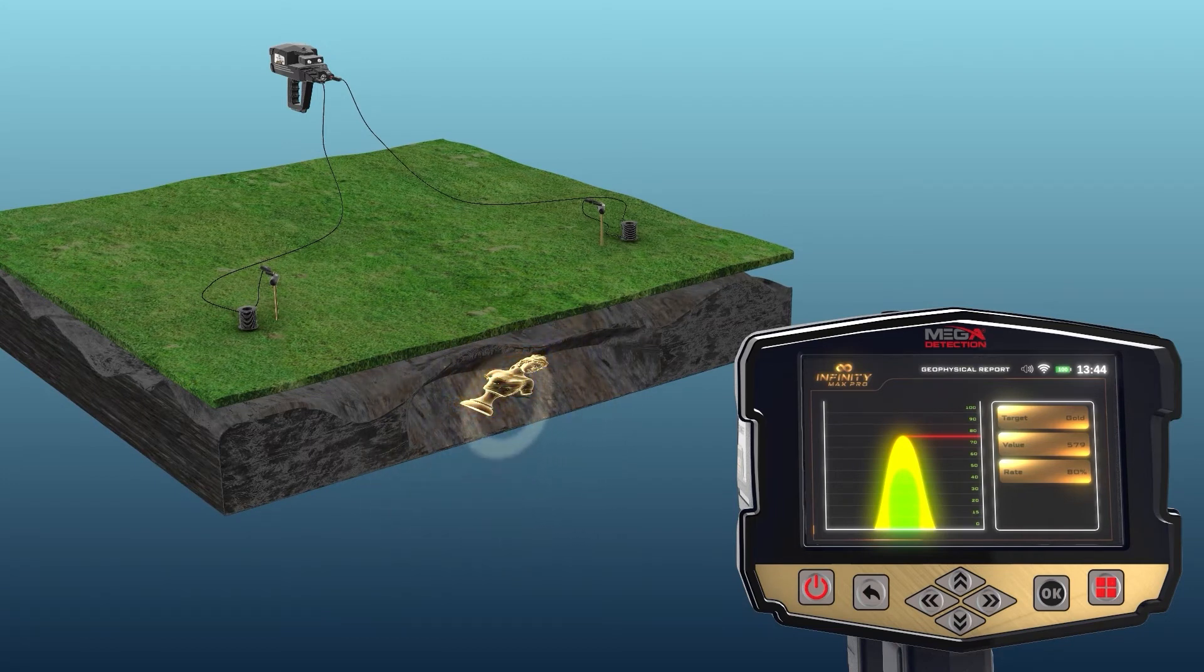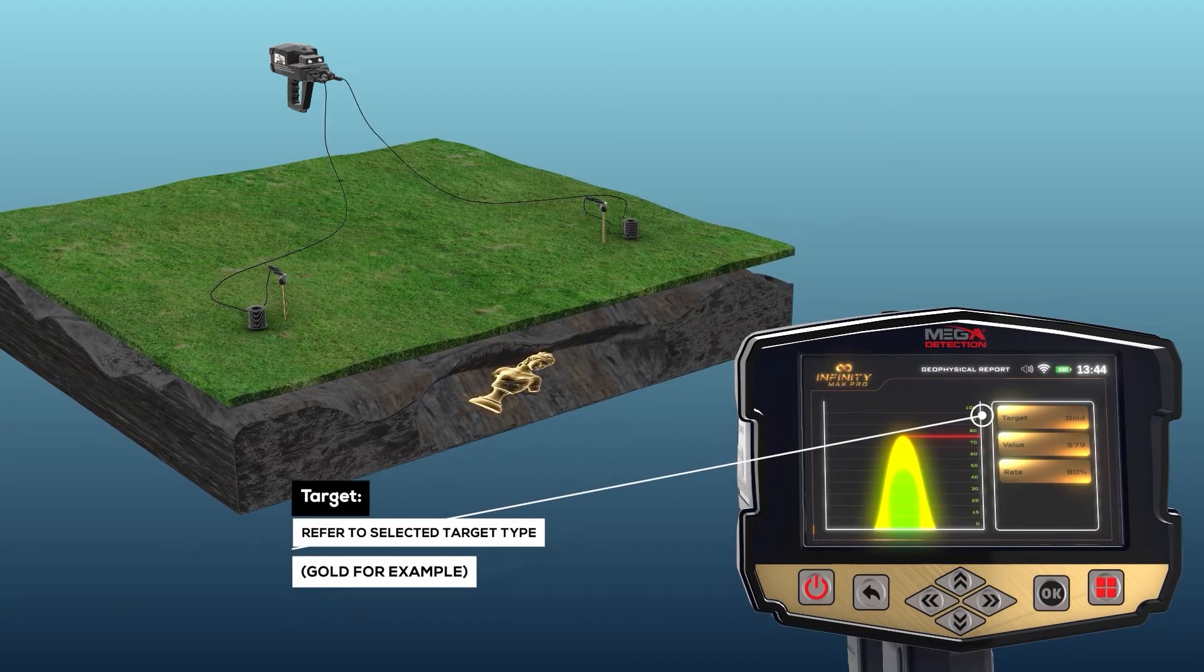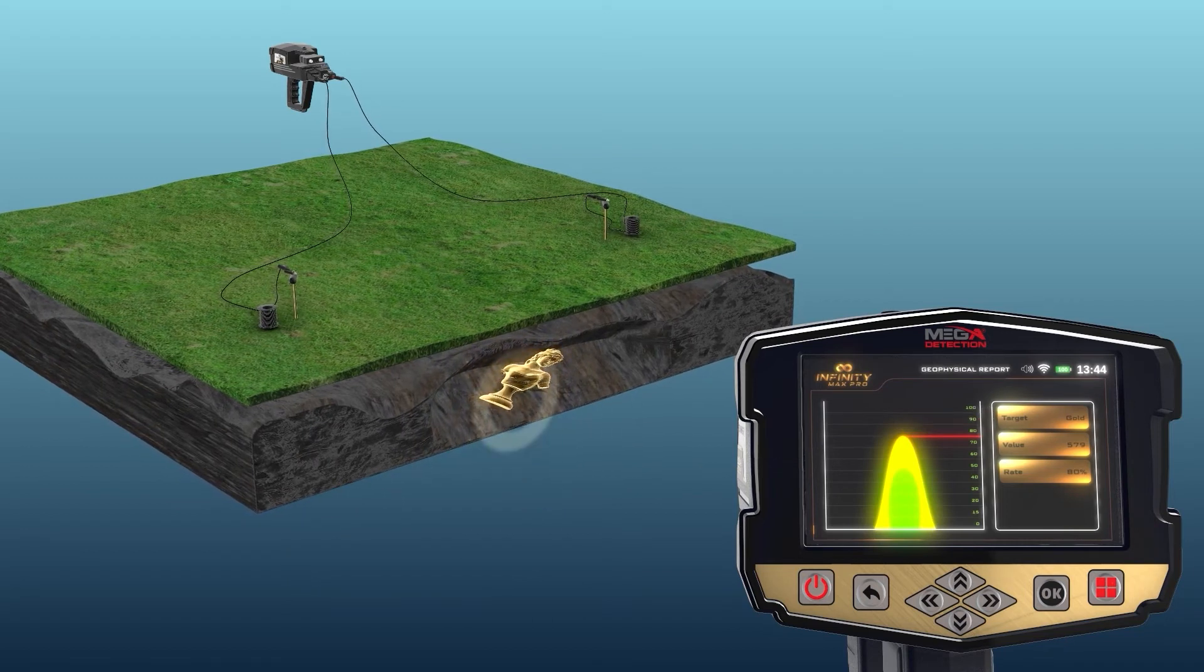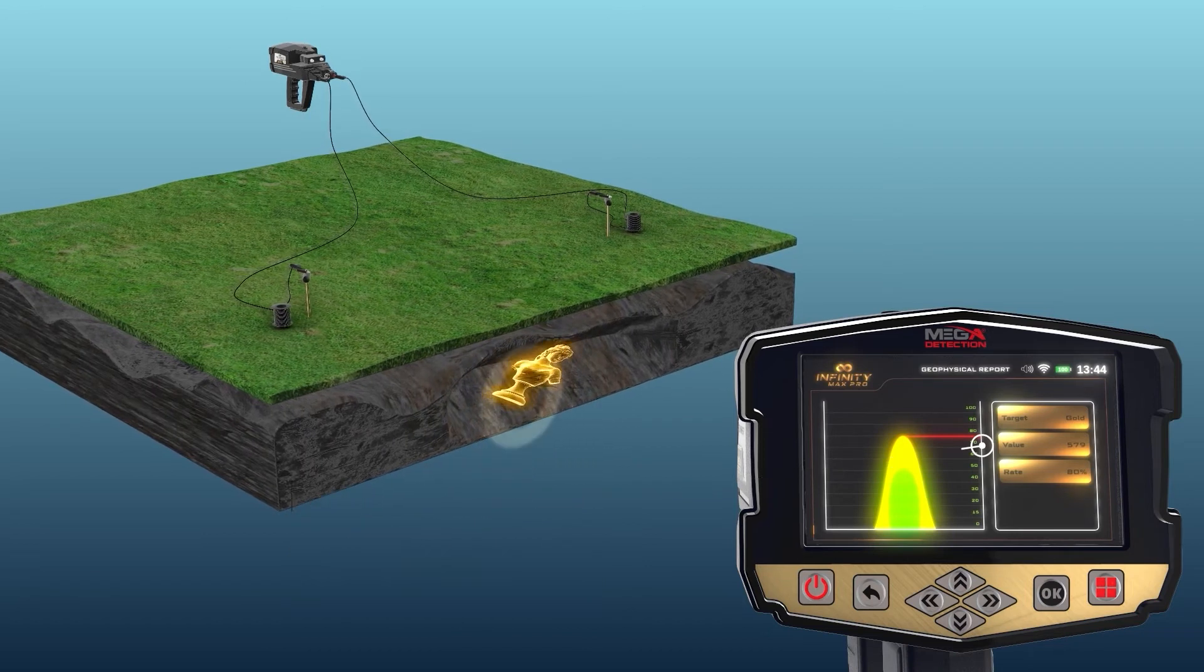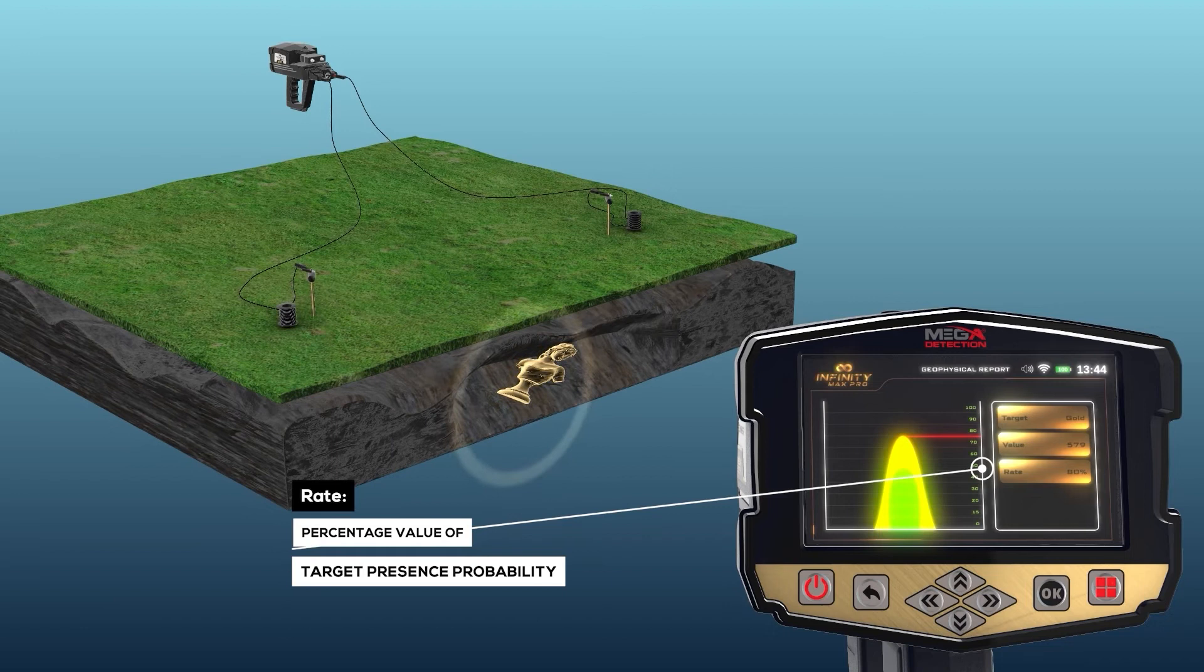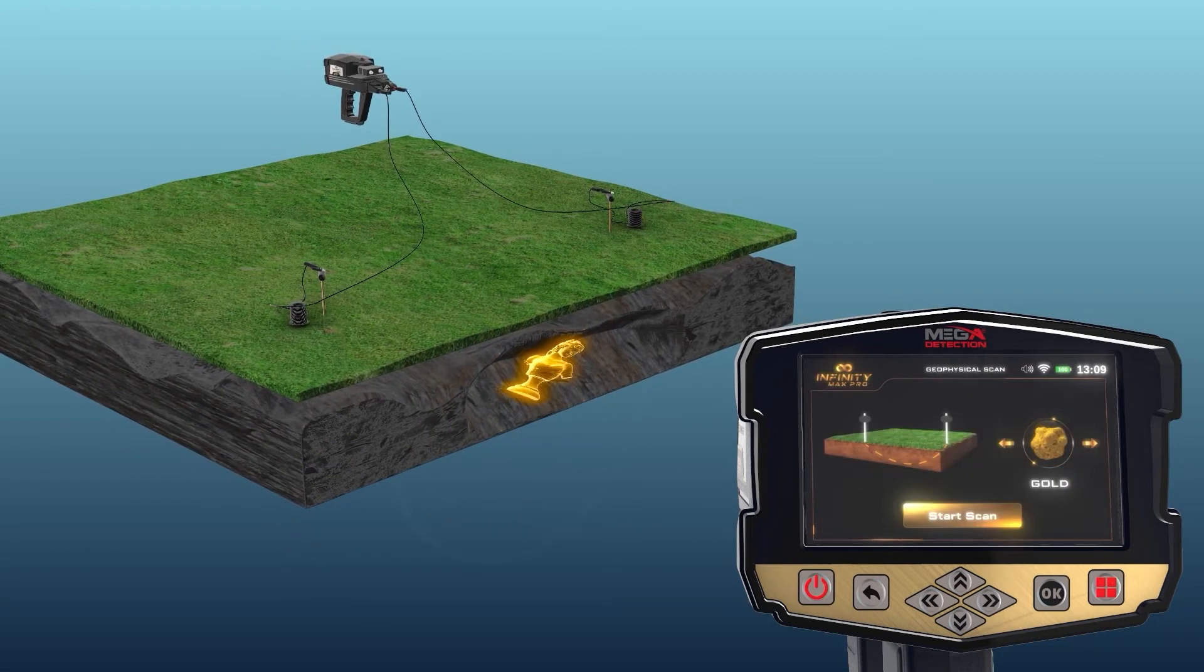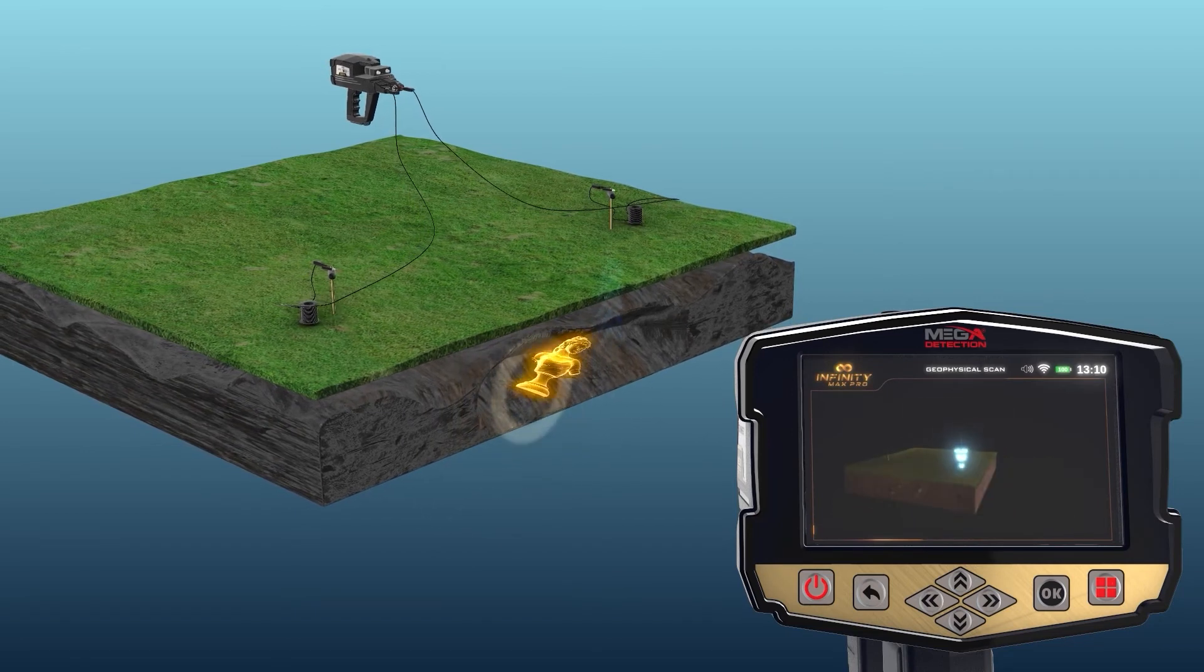To the right of the 2D plot are boxes containing information that includes: 1. Target, which refers to the selected target type (gold, for example). 2. Value, the ground resistivity measurement value. 3. Rate, the percentage value of target presence probability. This ratio corresponds to the apex, or peak, of the upper ellipse on curves.